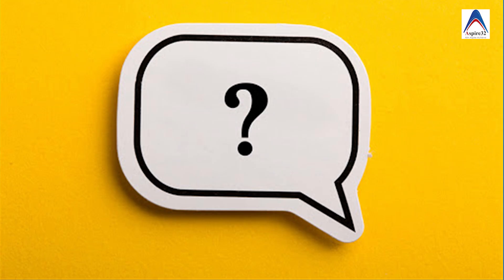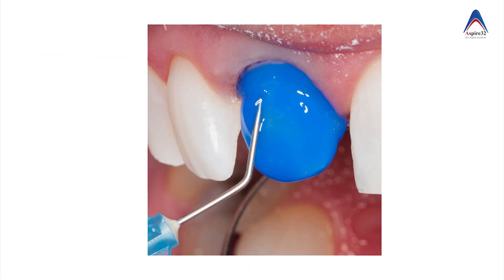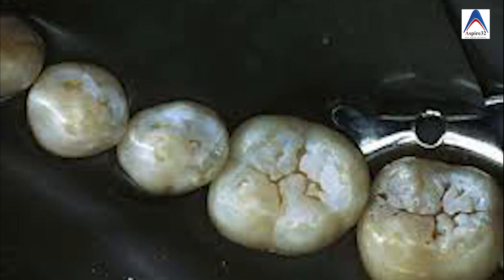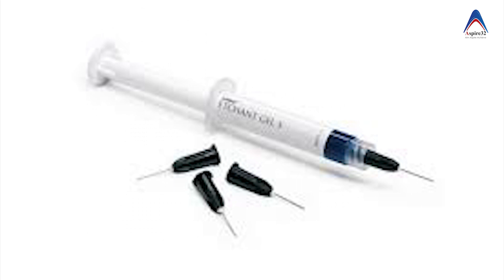The next common exam question is: why do you use etchant more often in gel form than liquid form? The answer is simple — in gel form you can do a precise application and restrict the etchant to exactly where you intend to etch. If you etch a tooth you do not intend to bond, that area takes more than 2 months to remineralize. That's why gel form is preferred, to prevent unnecessary demineralization.